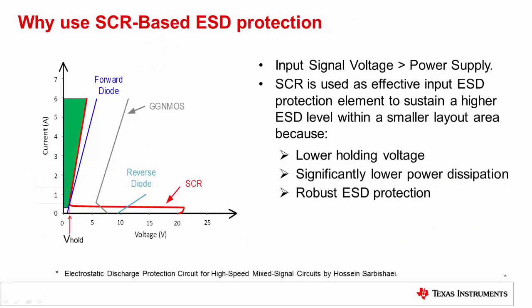You might be wondering why we would ever use the SCR type input protection structure. The main reason is that they are well suited for applications where the input voltage range is greater than the power supply. In the case of the traditional ESD diode, the input voltage range is limited to the supply plus a diode drop. For example, when using a traditional ESD diode with a 5-volt supply, the input range is limited to 5.3 volts. This doesn't work for systems where the input range is 12 volts but the supply is only 5 volts. Another reason the SCR structure is sometimes used is that the triggered on-impedance is very low, so the holding voltage is also very low. Thus, the SCR input structure is very effective at protecting against ESD for out-of-circuit conditions.